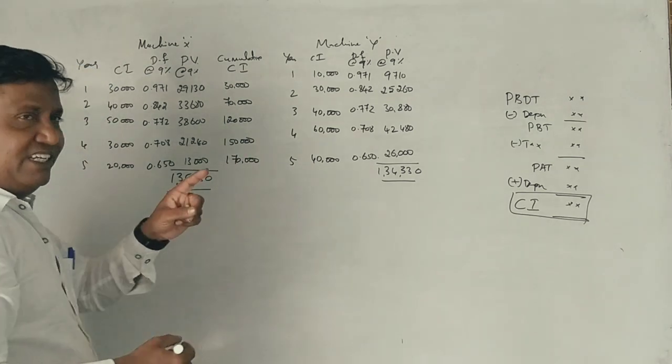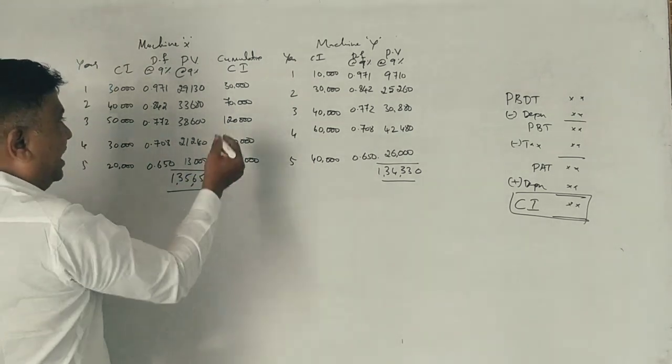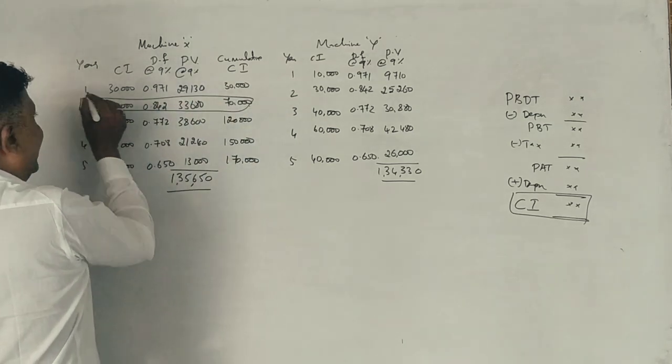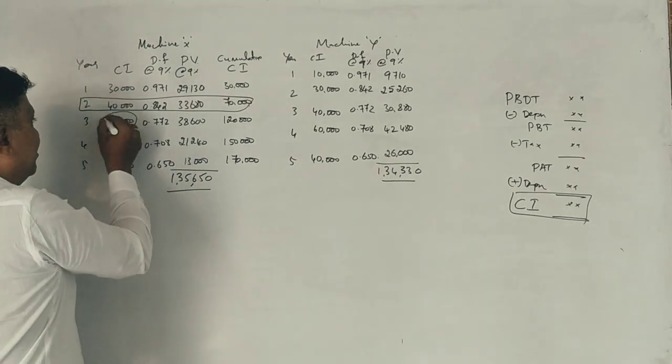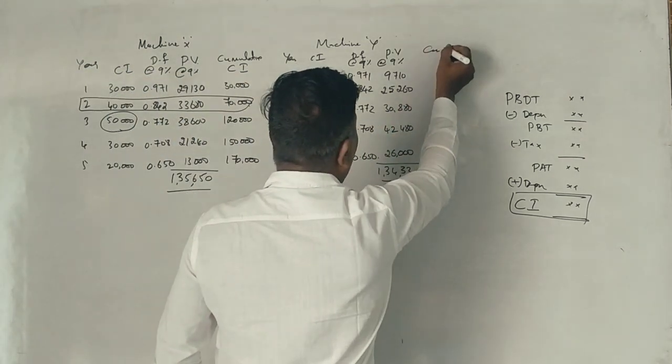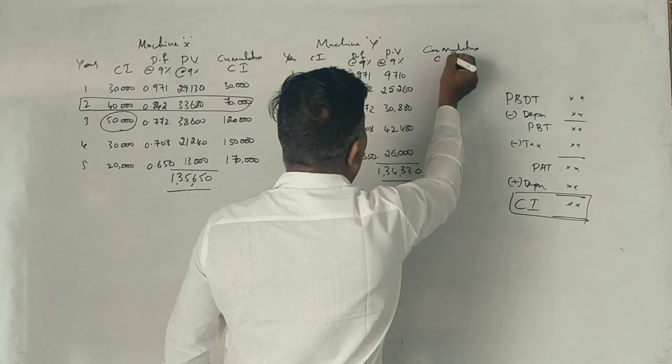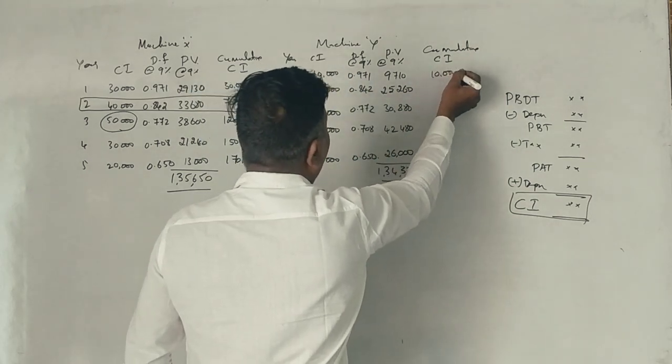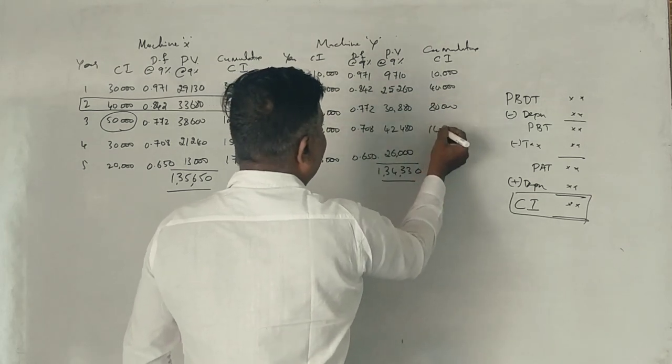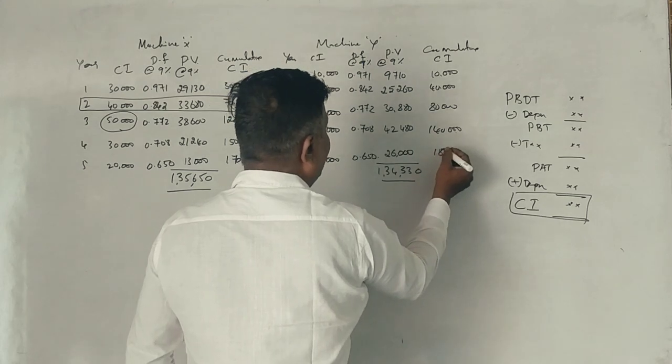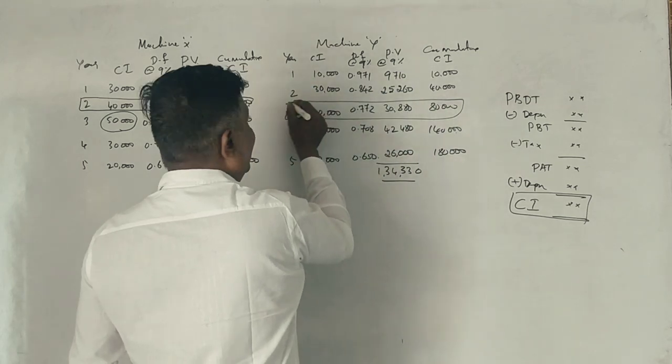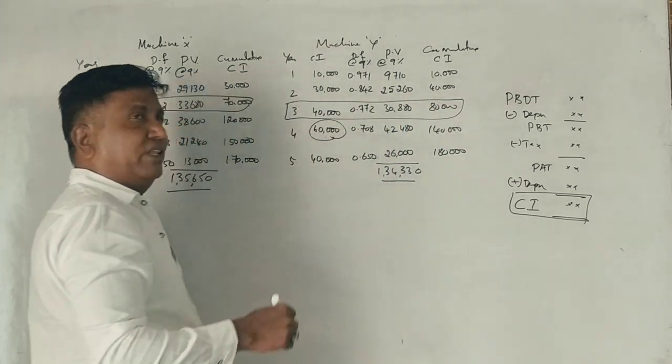See, 1 lakh is the initial investment. Second year maximum. For Machine Y: cumulative cash inflows are 10,000, 40,000, 80,000, 140,000, 180,000. We are getting 1 lakh in the third year. 80,000. Remaining 20 we will get in the fourth year.